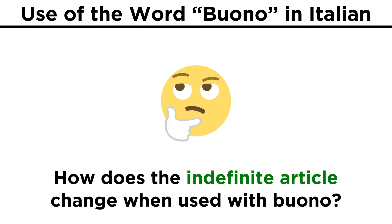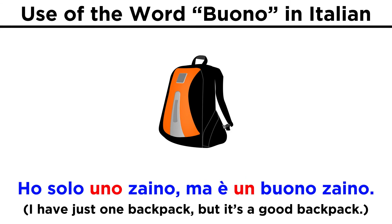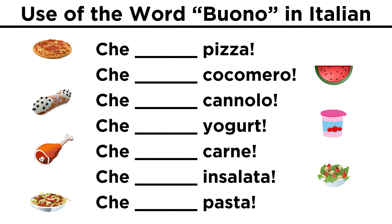We should notice how the article changes when used in conjunction with buono. Now that we understand this, let's say you're having a meal at a restaurant and you want to give compliments to the chef. Here are all the items you've eaten. Let's fill in the blanks with the correct form of buono, so that the chef will be thrilled with the compliment as well as your impeccable grammar.